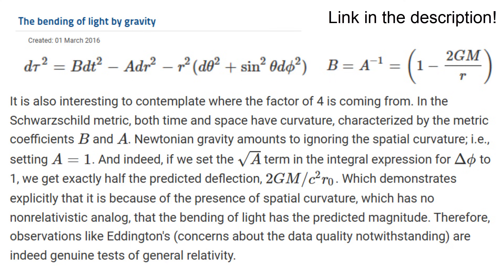Curiously, as Viktor demonstrates in another blog post, the full general relativity prediction comes from the spatial curvature. It is because of the presence of a spatial curvature, which has no non-relativistic analog, that the bending of light has the predicted magnitude.